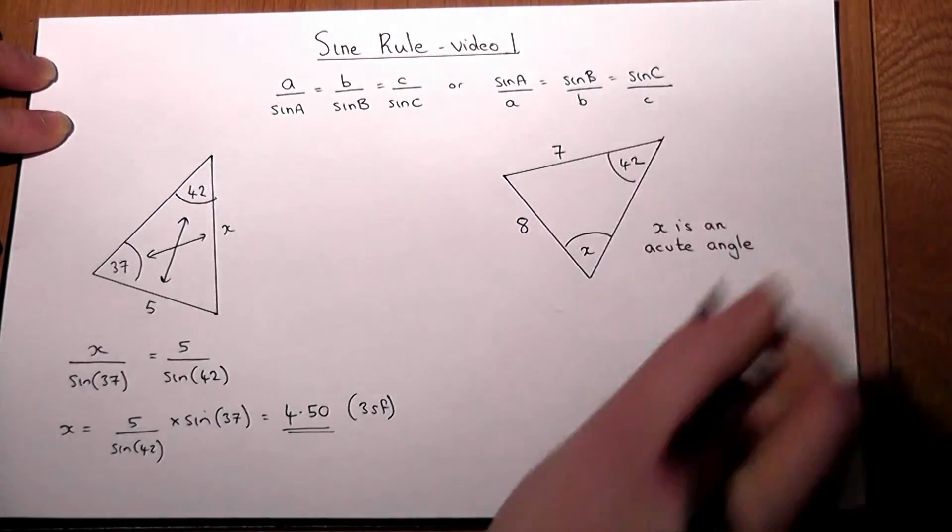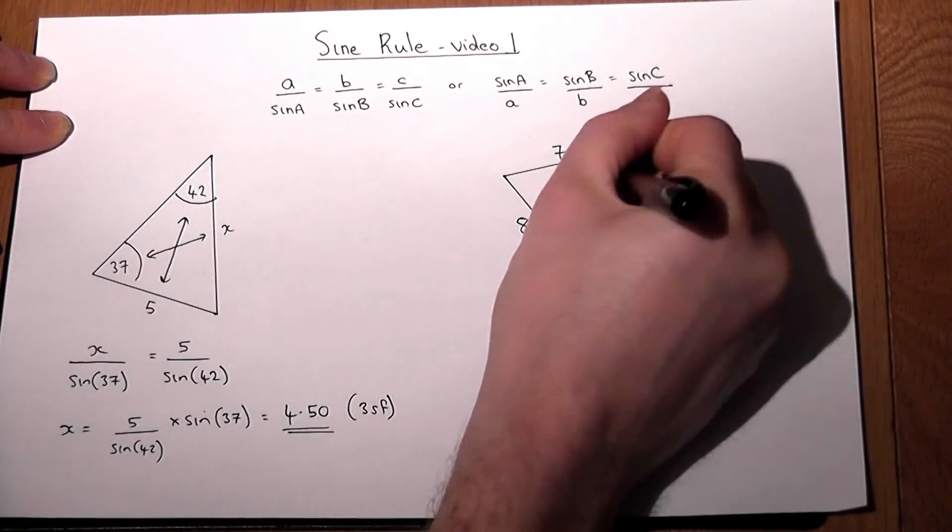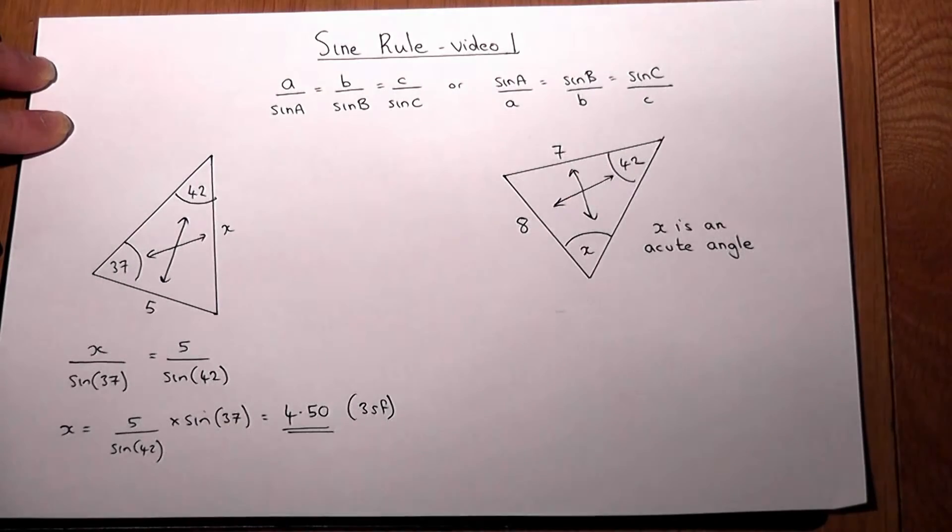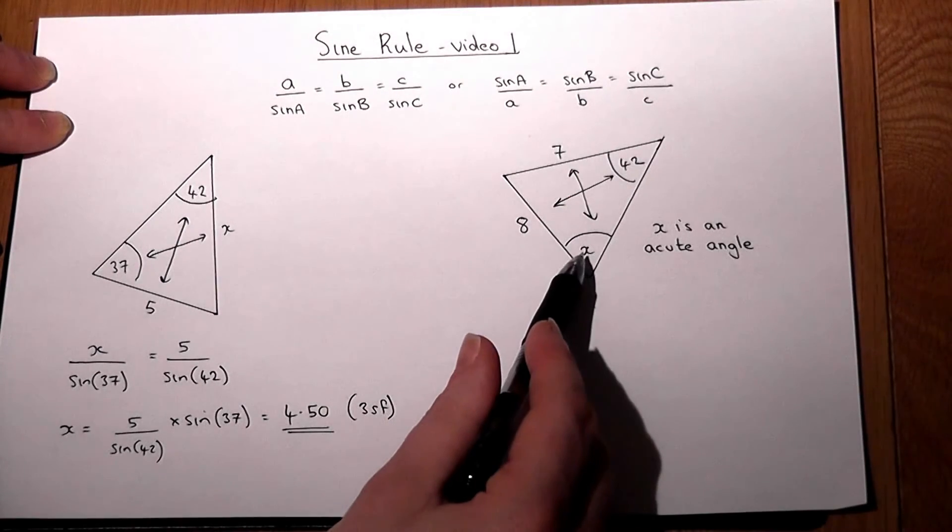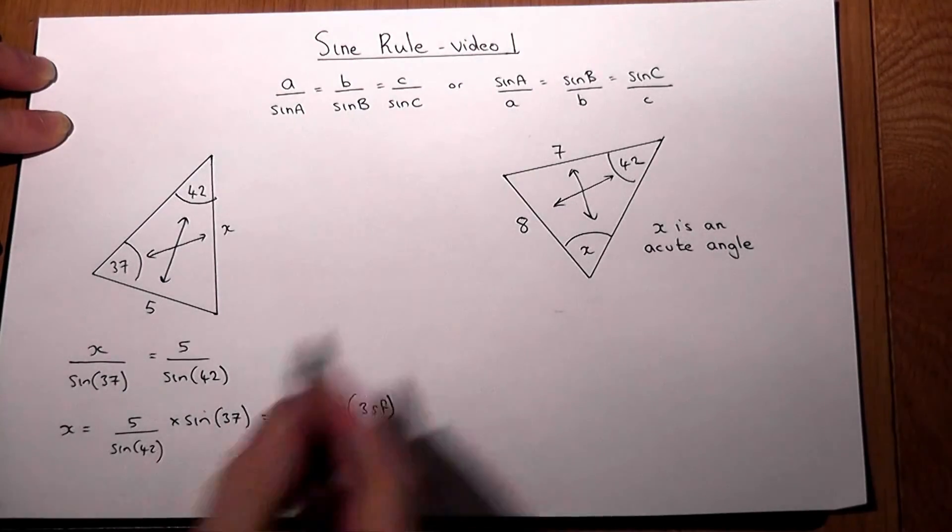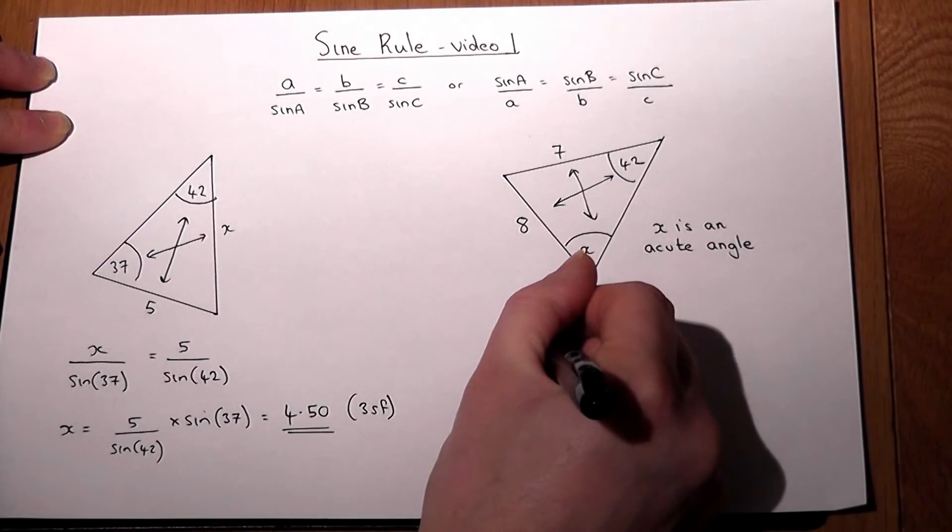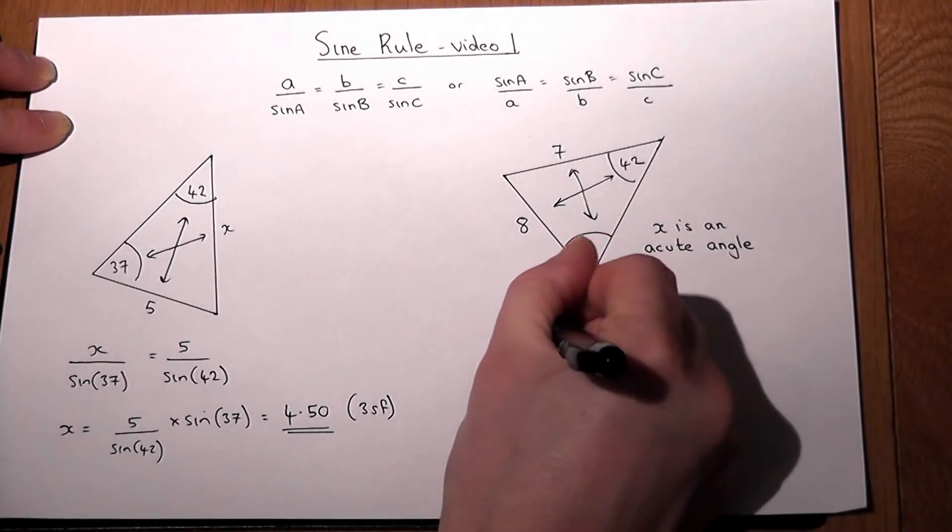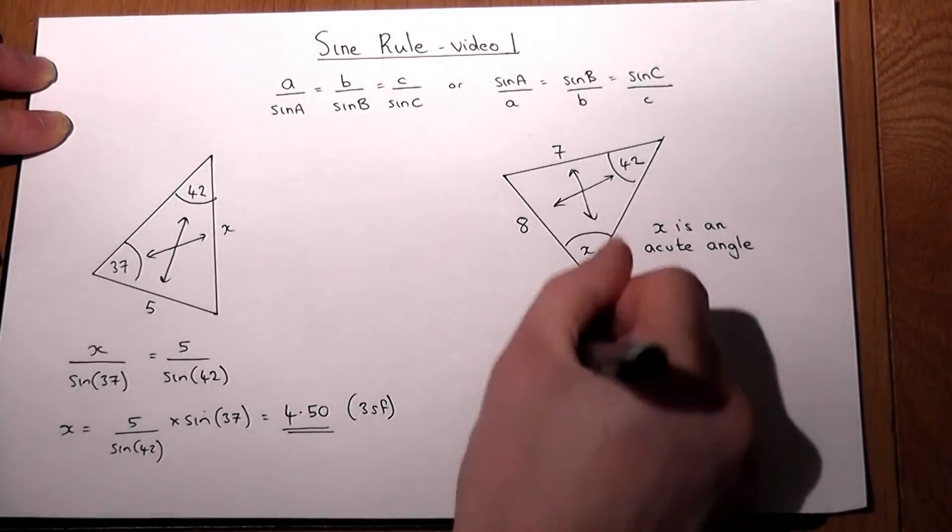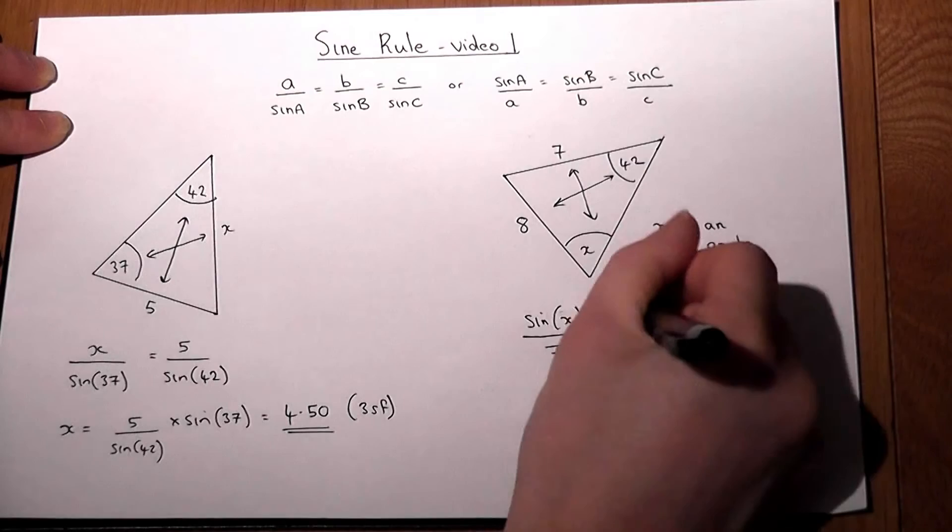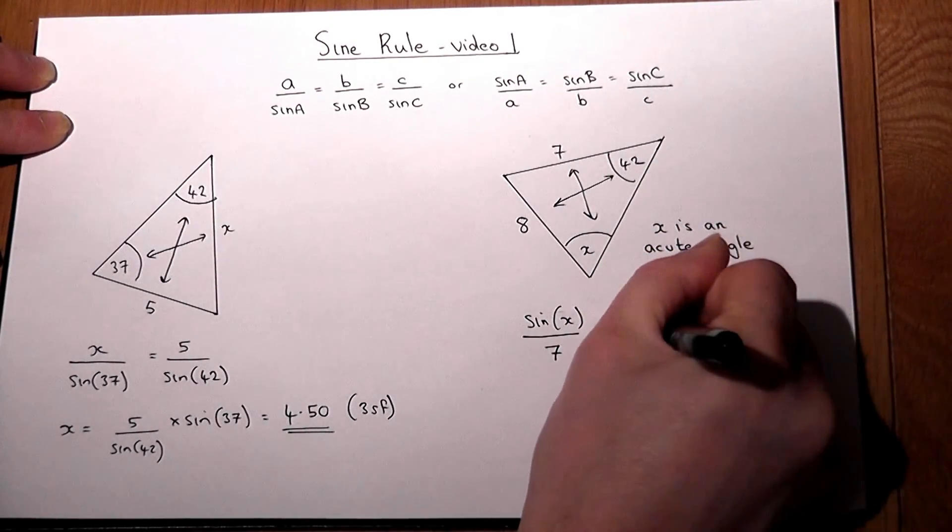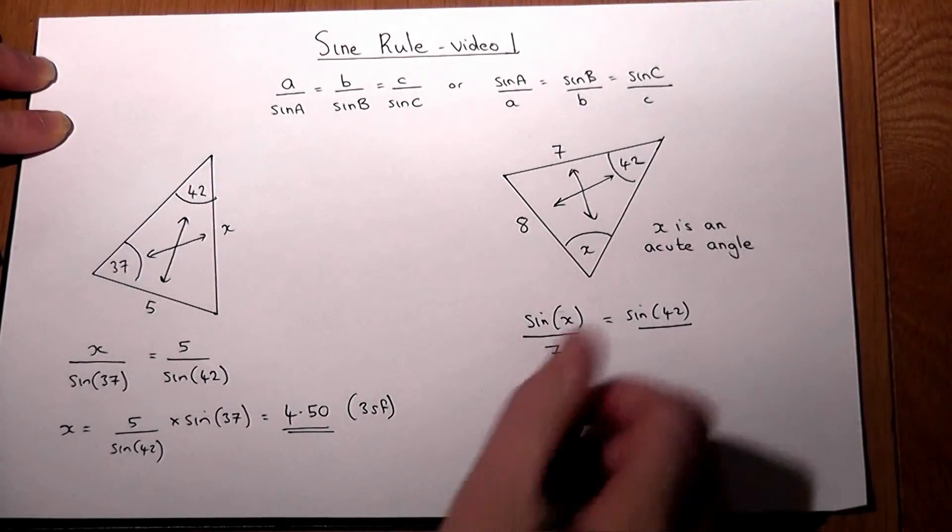In the second example, we still have the angles and sides pairing off, but we want to find an angle. We can actually spin the ratio over. If I begin with X, then with the sine rule it says that sine of X over its opposite side, which is 7, must equal sine of the other angle over its opposite side, which is 8.